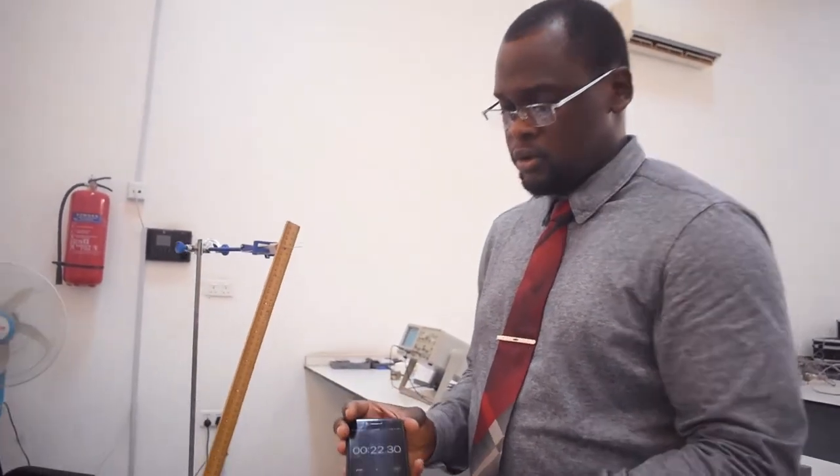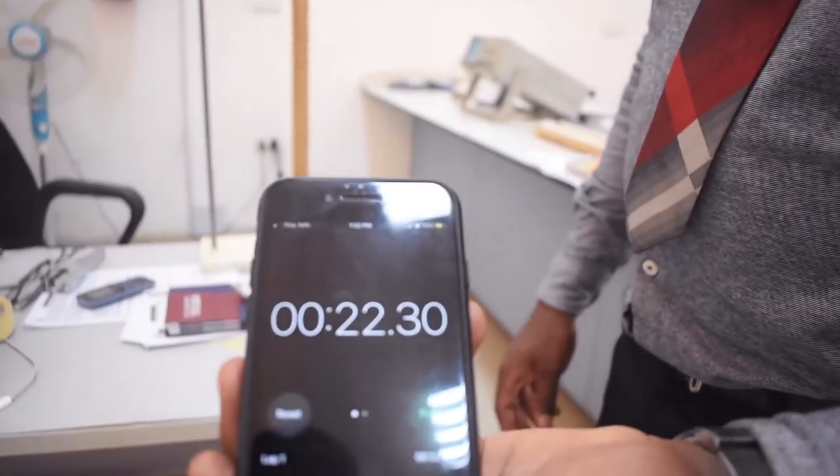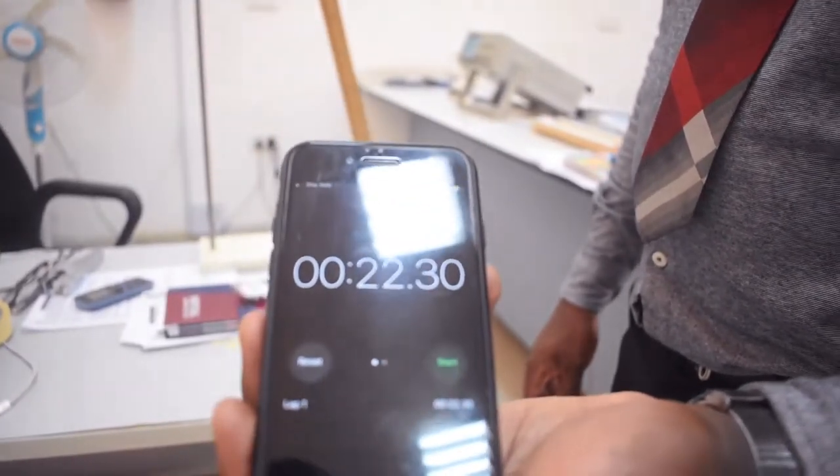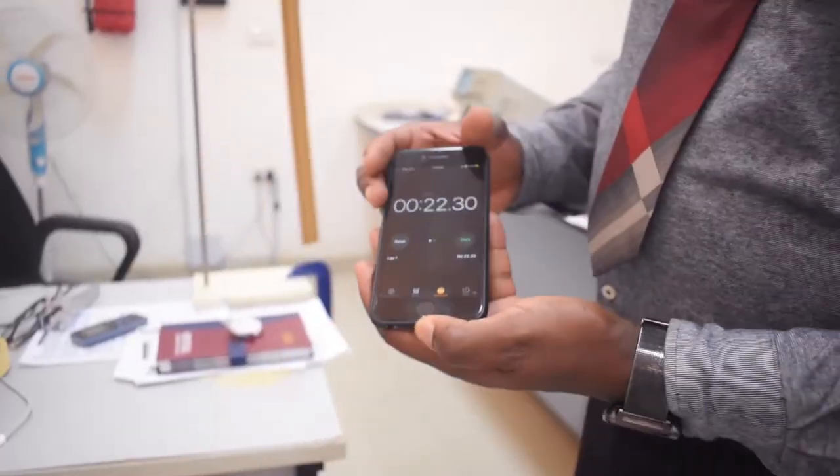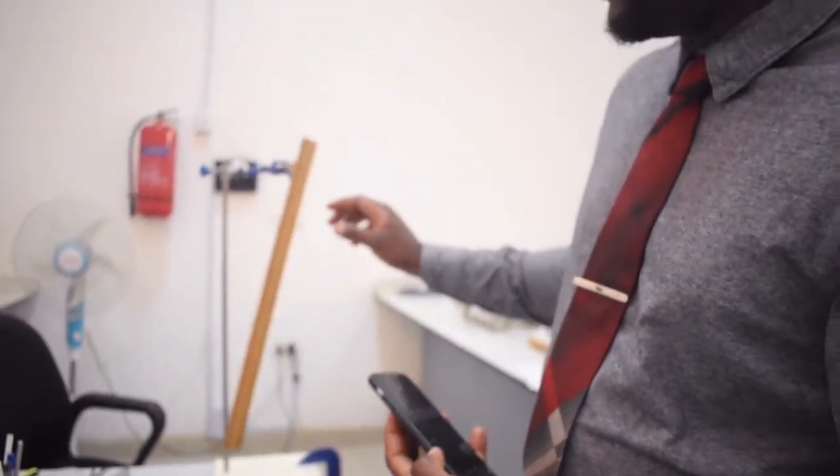We have recorded our time t1 as 22.30 seconds. Then students will do the same thing for the same position or the same length, which is 5 cm, to record time t2, then take the average and divide the average by 20 oscillations for the period T.